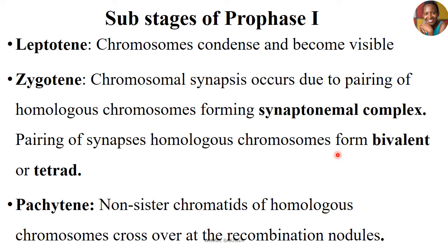Then we have the Pachytene sub-stage. At Pachytene, the non-sister chromatids of the homologous chromosomes have crossed over at the recombination nodules. The sister chromatids in our tetrads are able to cross over, creating synapses and allowing exchange of genetic materials. This is the same stage where chiasma or chiasmata appear.